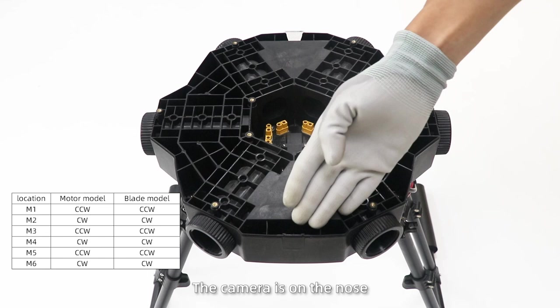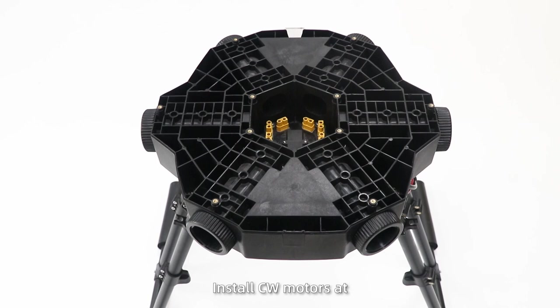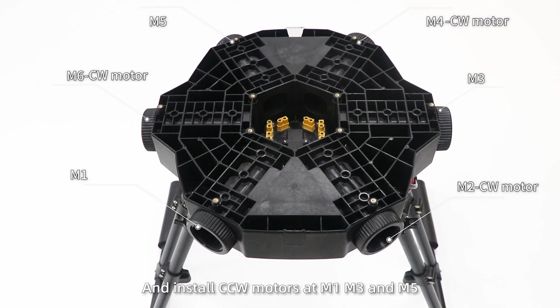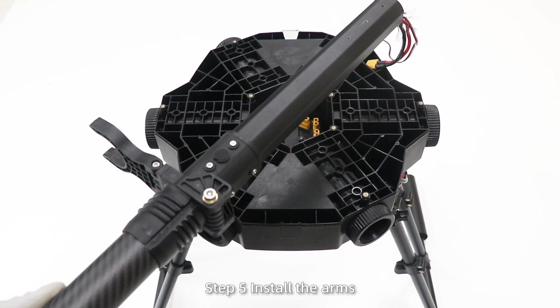Step 4: Install the arm. The camera is on the nose. From left to right with M1 to M6. Install CCW motors at M2, M4 and M6. And install CW motors at M1, M3 and M5.